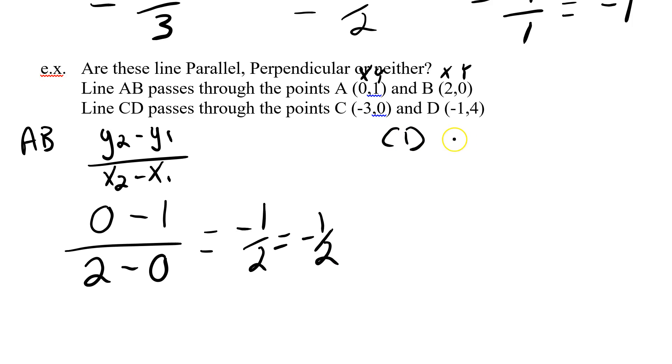Now let's do CD. Get the formula down again. y2 minus y1 divided by x2 minus x1. My y2 is negative 4 minus 0, divided by x2, which is negative 1, subtract negative 3. So negative 4 minus 0 gives me negative 4. Negative 1 minus negative 3, which is the same as adding, so negative 1 plus 3, that gives me positive 2. So negative 4 divided by 2 gives me negative 2.